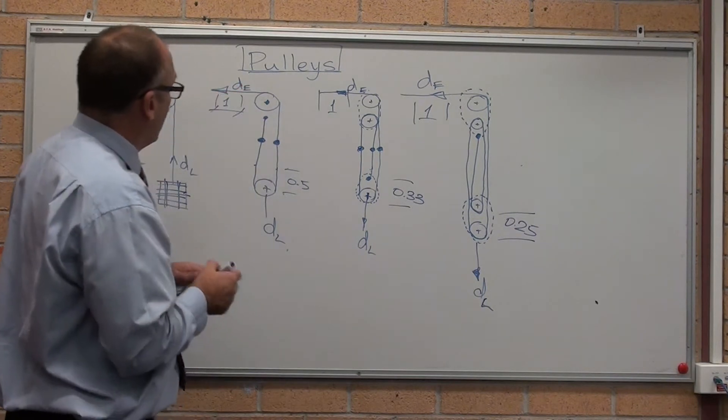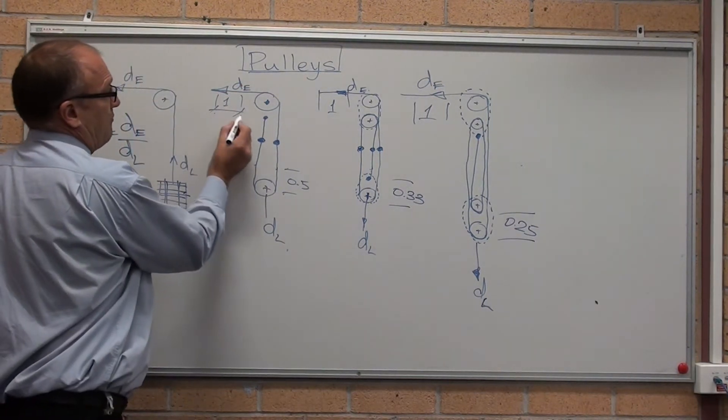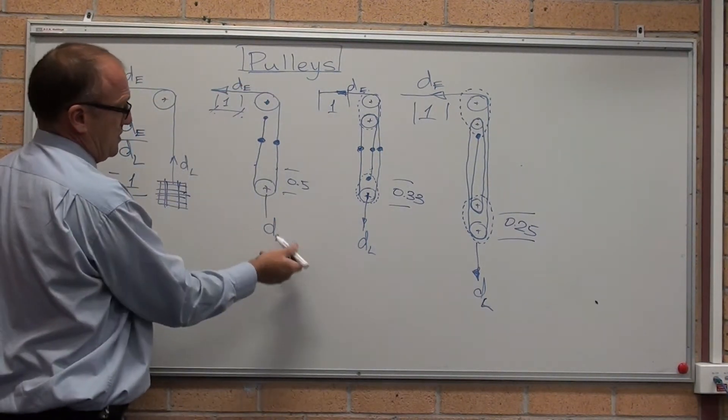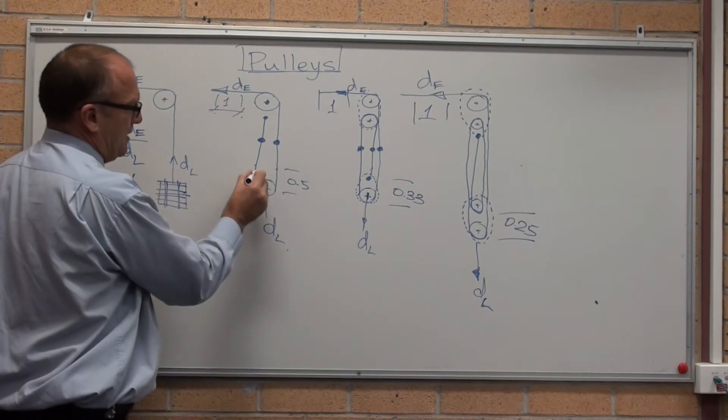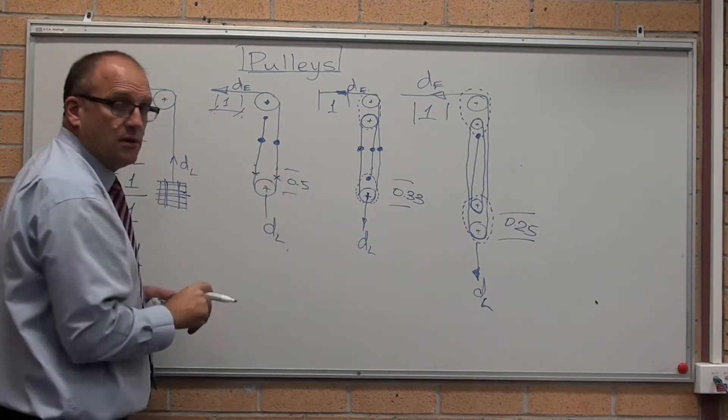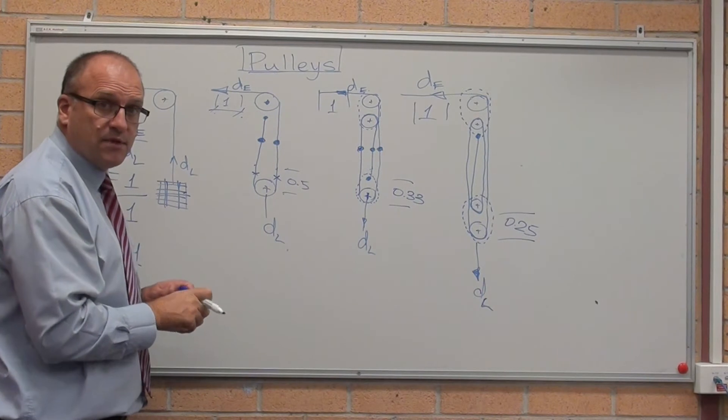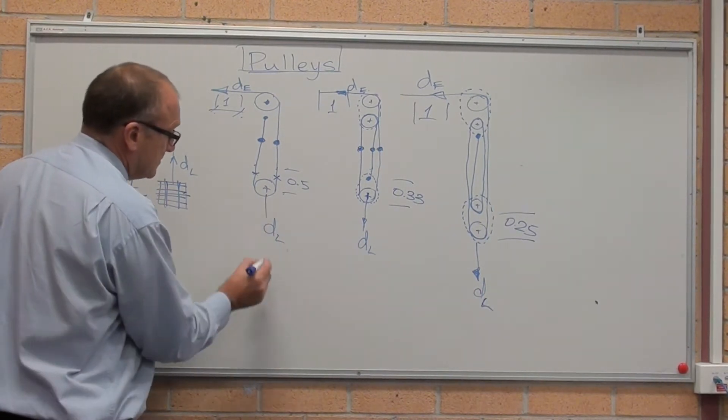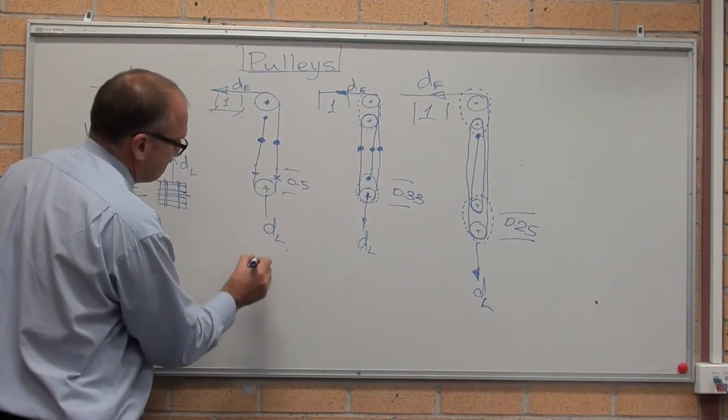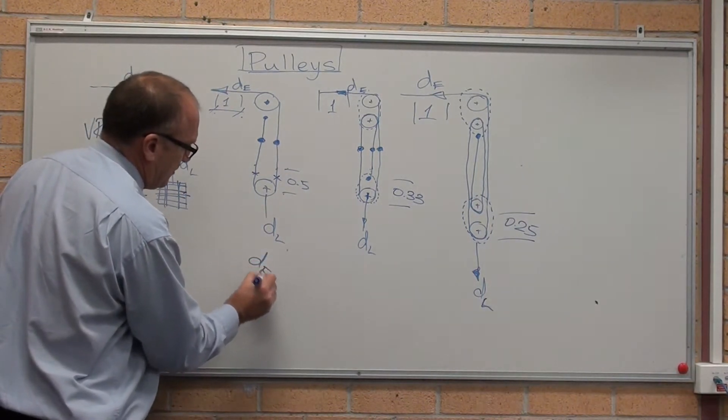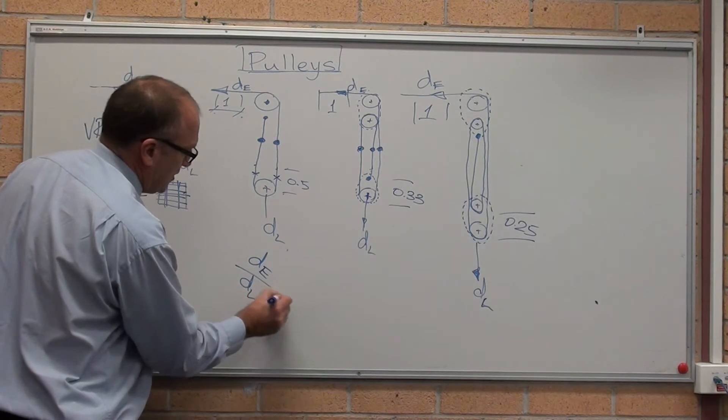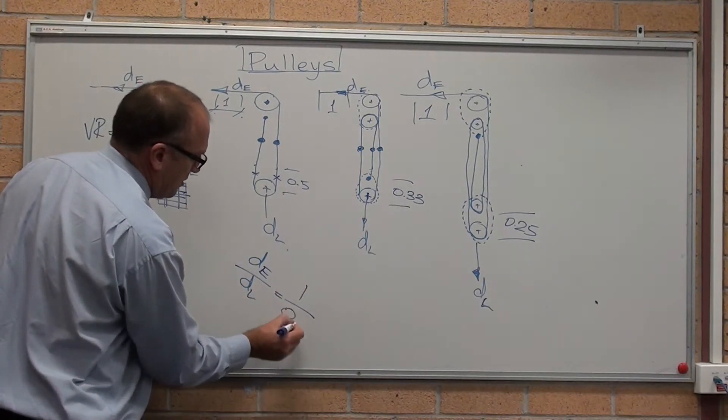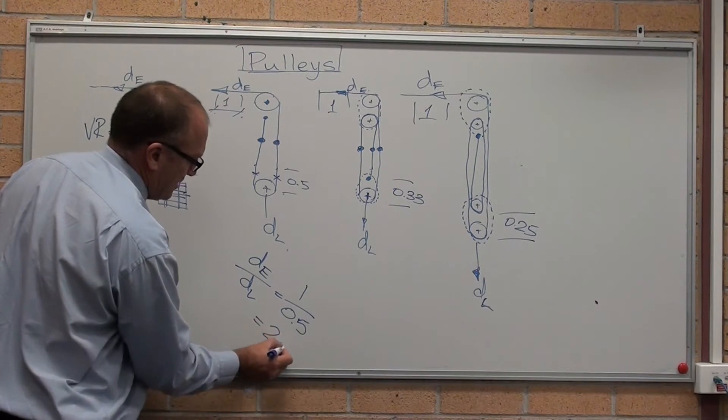For this second one, for every one meter that moves, the load moves up half a meter and it spreads the average distance those ropes move by half a meter. Distance moved by the effort on distance moved by the load equals one divided by 0.5 equals two as to one.